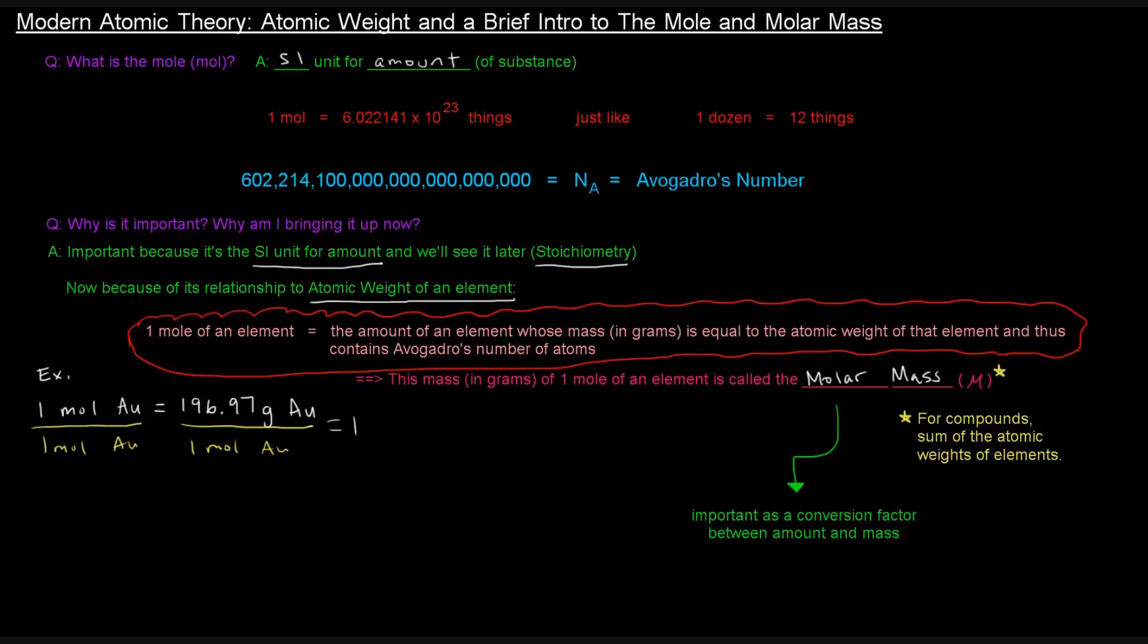This value here that we've basically made, this 196.97 grams of gold per one mole of gold is the molar mass. This is the molar mass. Of course, the units here are grams per mole.